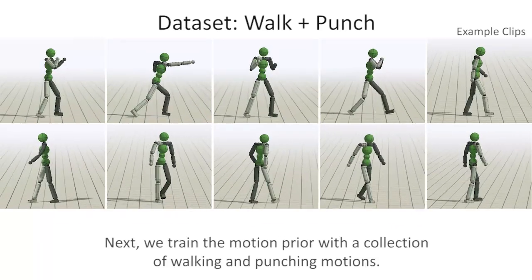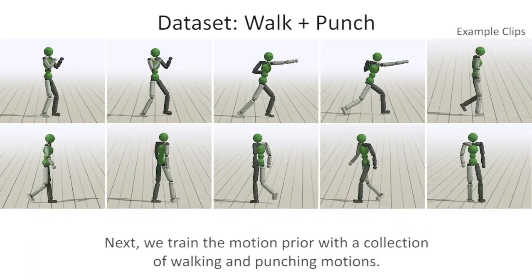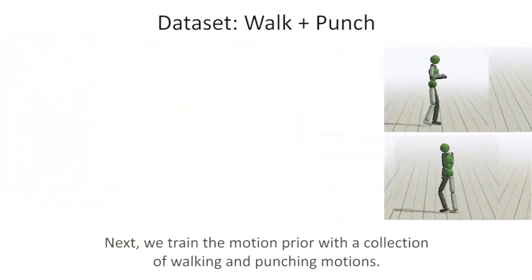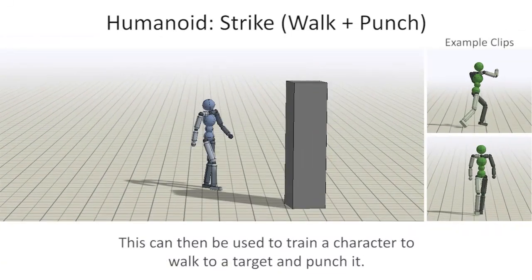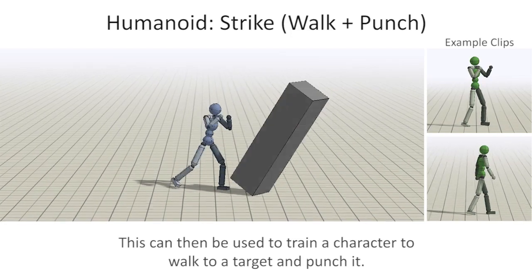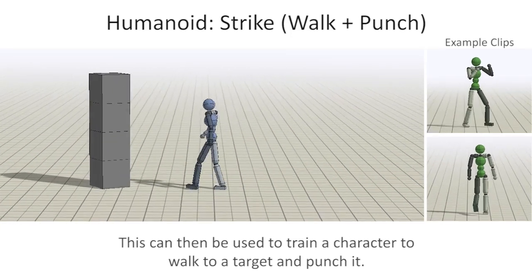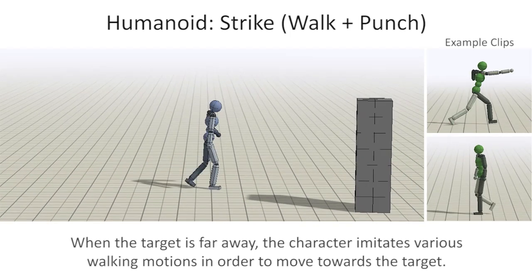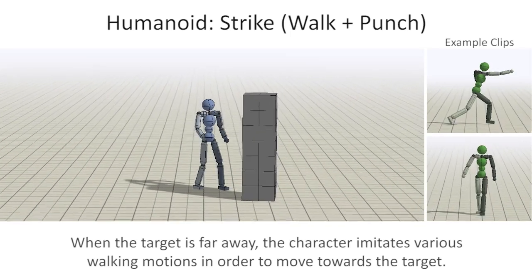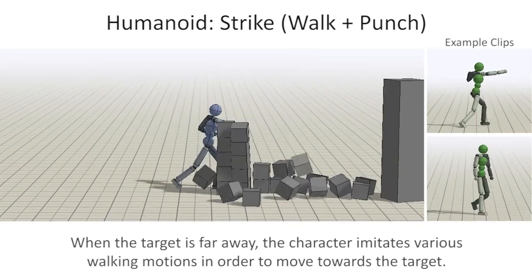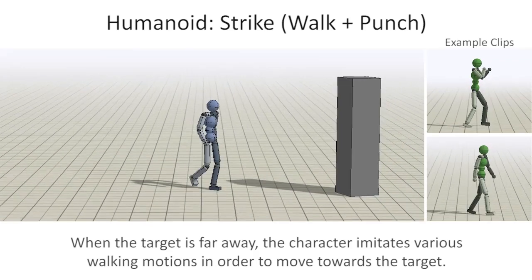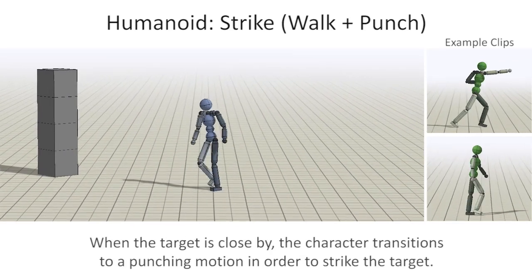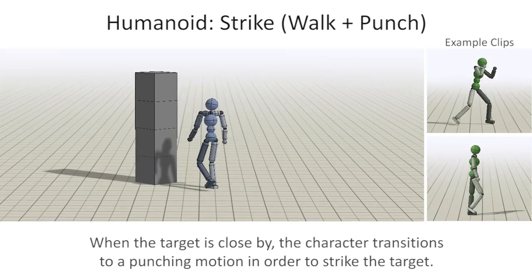Next, we train the motion prior with a collection of walking and punching motions. This can then be used to train a character to walk to a target and punch it. When the target is far away, the character imitates various walking motions in order to move towards the target. When the target is close by, the character transitions to a punching motion in order to strike the target.